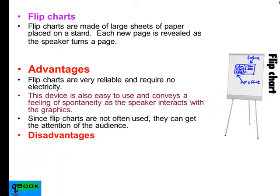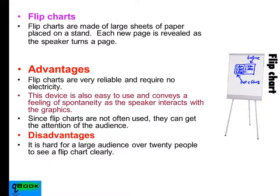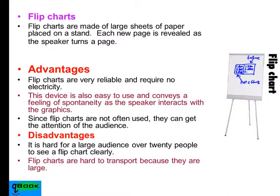The disadvantages of a flip chart include the fact that not everyone can see it if you have a large audience — a flip chart is maybe one to one-and-a-half meters tall. Also, flip charts are hard to transport because they're big — you can't put one in your backpack. Usually the flip chart is already in the room and you don't take it with you.